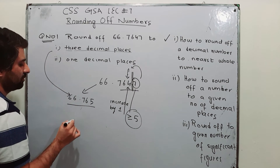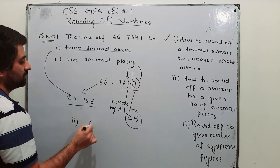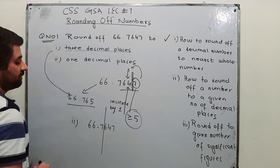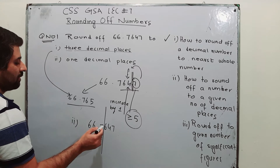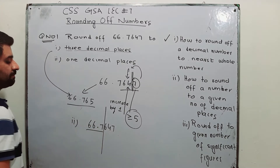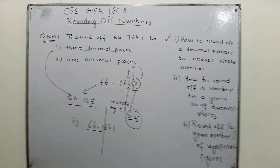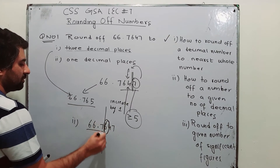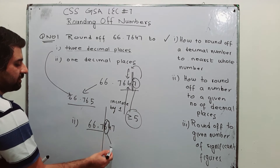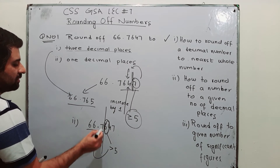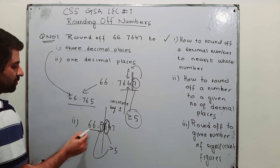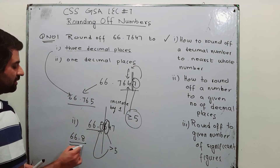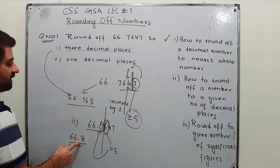For part 2, write down 66.7647. For 1 decimal place, your limit is the first digit after the decimal. You drop everything after it. The following digit is 6, which is greater than 5, so you increase the previous digit 7 by 1. Your answer is 66.8. This is your answer up to 1 decimal place.